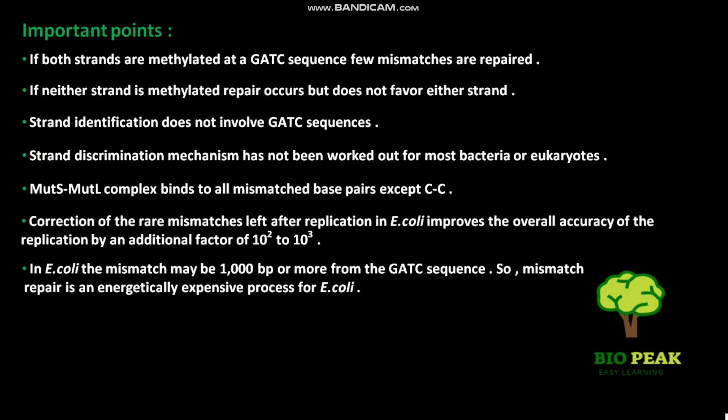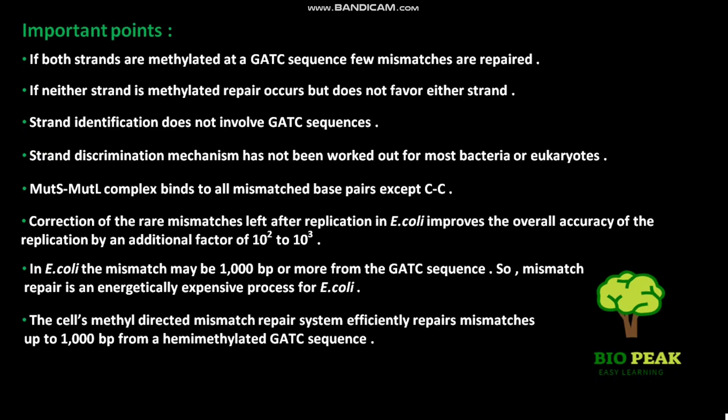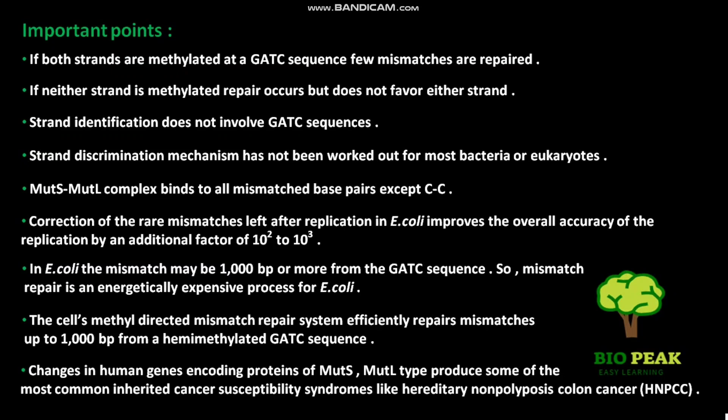So, mismatch repair is an energetically expensive process for E. coli. The cell's methyl-directed mismatch repair system efficiently repairs mismatches up to 1000 base pairs from a hemimethylated GATC sequence. Changes in human genes encoding proteins of MutS, MutL type produce some of the most common inherited cancer susceptibility syndromes like hereditary non-polyposis colon cancer or HNPCC.